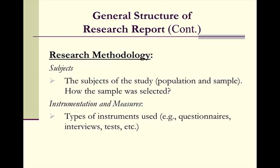Your research methodology covers subjects, or participants if you're going with APA style — the subjects of the study, how the sample was selected. Was it a sample of convenience? Are you just studying people around you? Is it a random sample? Is it a classroom sample? You're also looking at your instrumentation and measures — the type of instruments you use: questionnaires, interviews, tests, etc.